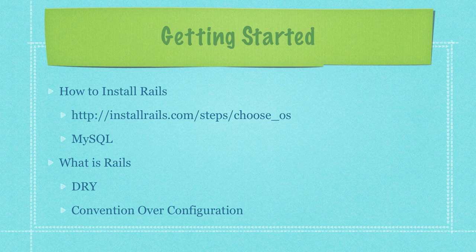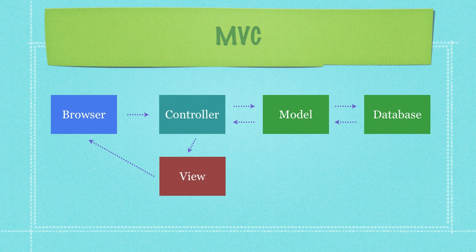Rails is built around the MVC pattern — Model View Controller. When somebody goes to a browser to use your web application, they're going to be routed to one of many different controllers. The controller responds to user events and helps translate what's in the model or database out into a viewable form on the browser using what we call the view. By doing things this way, each time you change your view you don't have to change the model, and vice versa.